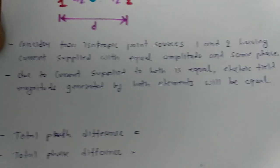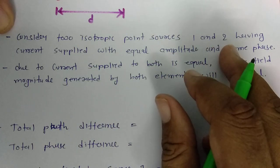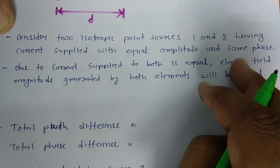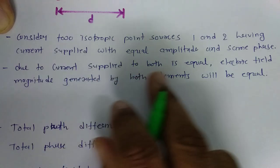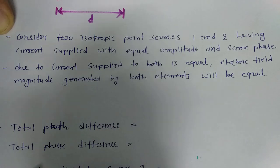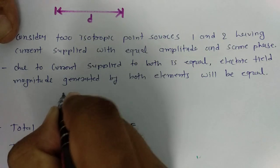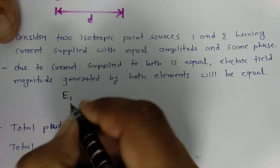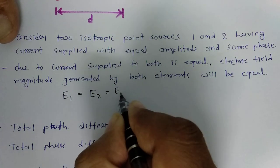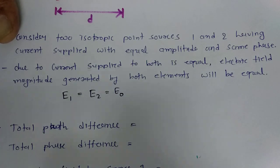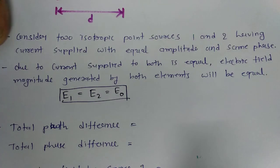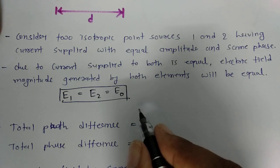We have two isotropic point sources 1 and 2, and we supply current of equal magnitude and same phase to both. Because the current supplied is equal, the electric field magnitude generated by both elements will be equal. So E1 = E2 = E0.